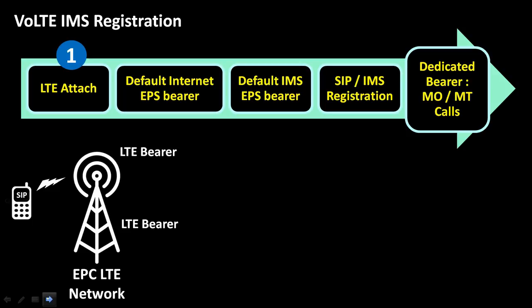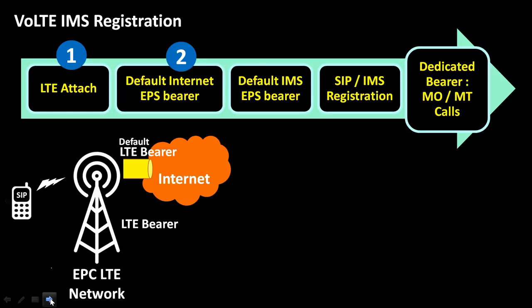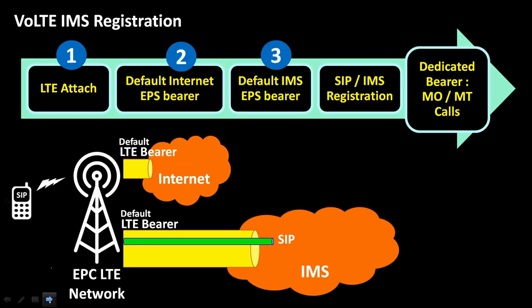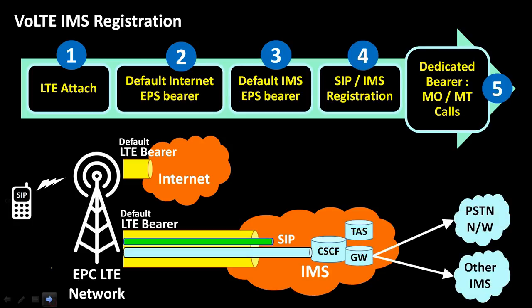The first step is attaching to the LTE network. The second step is activating the default internet EPS bearer, after which the user can access the internet. The third step is default IMS EPS bearer activation, used for communicating with the IMS network. The last step is SIP and IMS registration, where the UE communicates directly with the IMS network. The LTE network acts only as a highway to relay messages between UE and IMS network. Post IMS registration, a dedicated bearer is established on the fly for MO or MT calls.